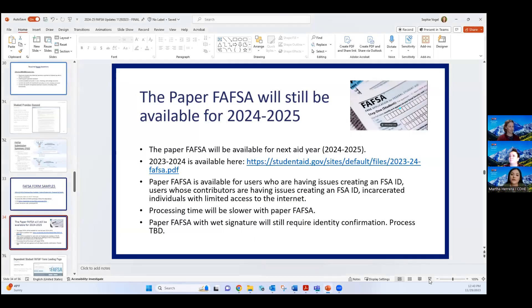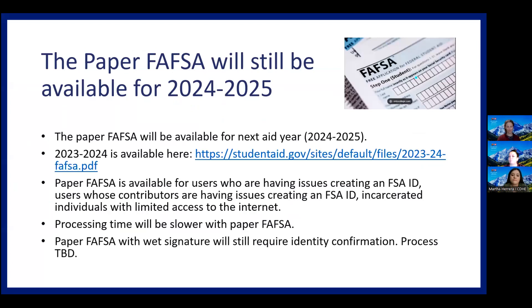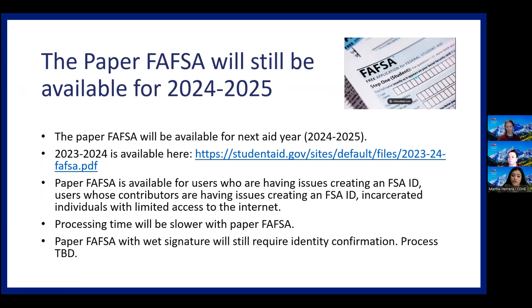The paper FAFSA will still be available. The paper FAFSA is available for users who are having issues creating an FSA ID, users whose contributors are having issues creating an FSA ID, and incarcerated individuals with limited access to the internet. The processing time will be slower with the paper FAFSA, but students are welcome to still submit it. The paper FAFSA with wet signatures will still require an identity confirmation process — we don't know the process yet as it's to be determined, but this option will still be available.